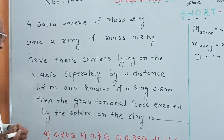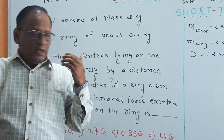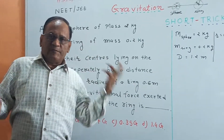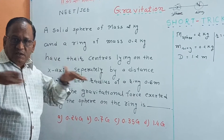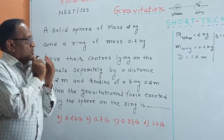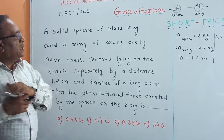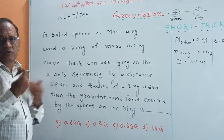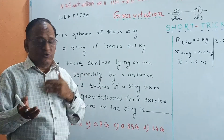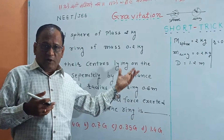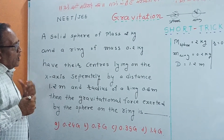Then, the gravitational force exerted by the sphere on the ring — we take these two objects, one is the sphere and the other is the ring, and their centers lie on the horizontal axis. What is the force exerted by the sphere on the ring? Generally we use the formula F = GM₁M₂/R², but you cannot directly use that formula in this case of a sphere and ring.